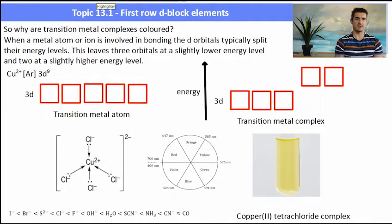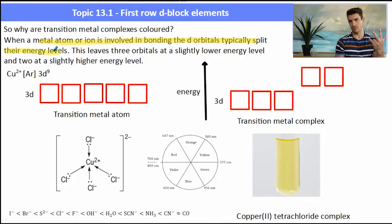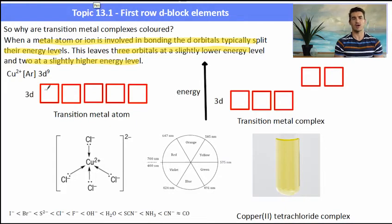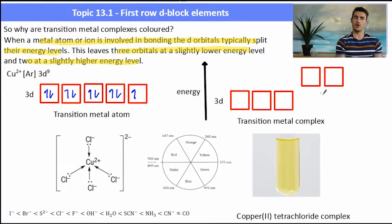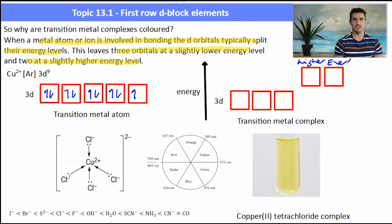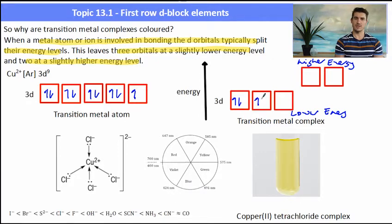Why are transition metal complexes coloured? When a metal atom is involved in bonding, the d-orbitals typically split into three and two — three d-orbitals at a lower energy level and two d-orbitals at a higher energy level. Here we have the copper 2+ ion, and we'll draw the electron configuration using an orbital diagram. We have one electron that is unpaired. When it combines with chloride ligands, those d-orbitals split into three at a lower energy and two at a higher energy.